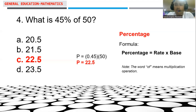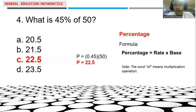For number 4, the question is: what is 45% of 50? The rate is equal to 45%, and we are taking 45% of 50, so 50 is considered the base. Note that the word 'of' means multiplication operation, so it is like multiplying 45% by 50.